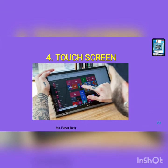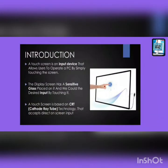Next category is the touch screen. A touch screen is an input device that allows users to operate a PC by simply touching the screen, like you use your cell phones—you just tap your screens and open whatever you want to. The display screen has a sensitive glass placed on it, and we input by touching it. A touch screen is based on CRT (cathode ray tube) technology that accepts direct on-screen input.